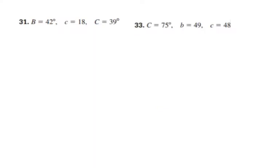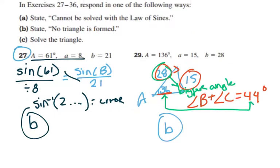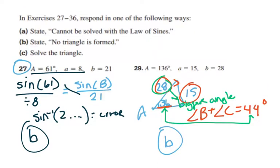Then the same thing happens for number 31 and 33. Again, we're trying to identify if we can solve or cannot solve with the law of sines, no triangle is formed, or to solve the triangle.